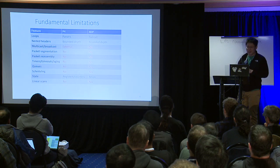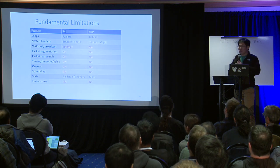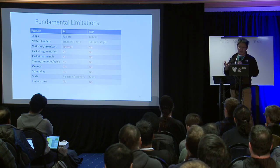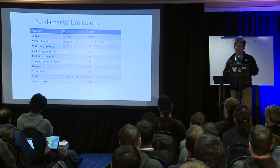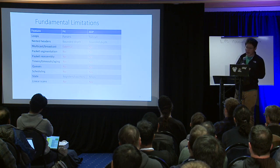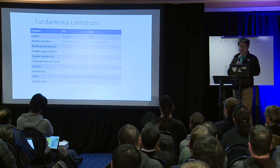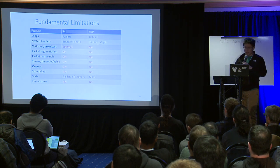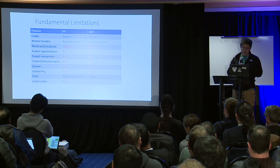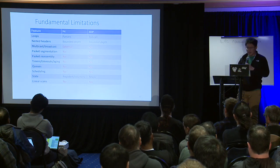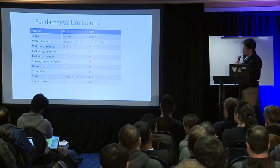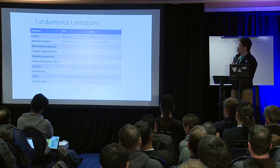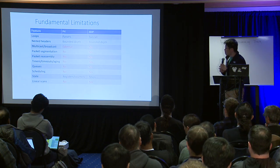Some limitations: comparing P4 and XDP, loops in P4 are only allowed in the parser, while XDP can do tail calls. For nested headers, P4 supports bounded depths and so does XDP. Features like multicast, packet segmentation, packet reassembly, queue scheduling, and linear scans are not supported in either P4 or XDP.